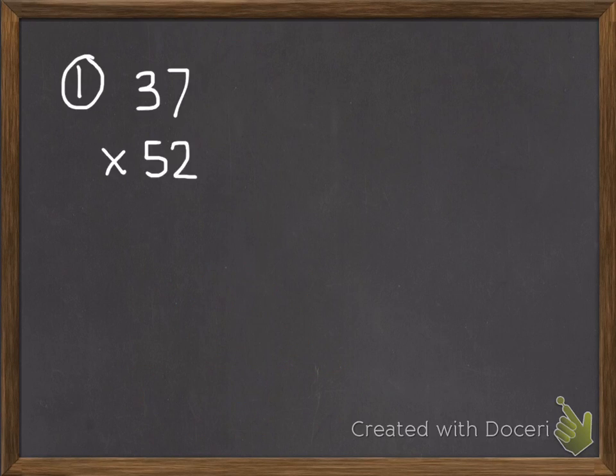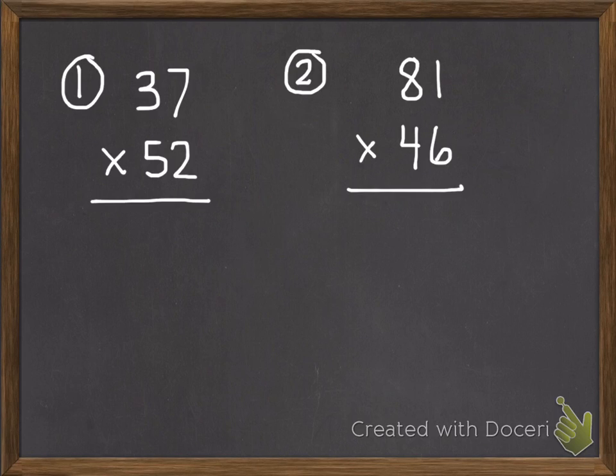Okay, here are your two problems: 37 times 52 and 81 times 46. After these two problems, I do have another strategy. Since this was already a little bit long, I'll make it optional. But it is a strategy that can definitely help you check your work. So go ahead and pause for these problems and there is a little bit more to watch.